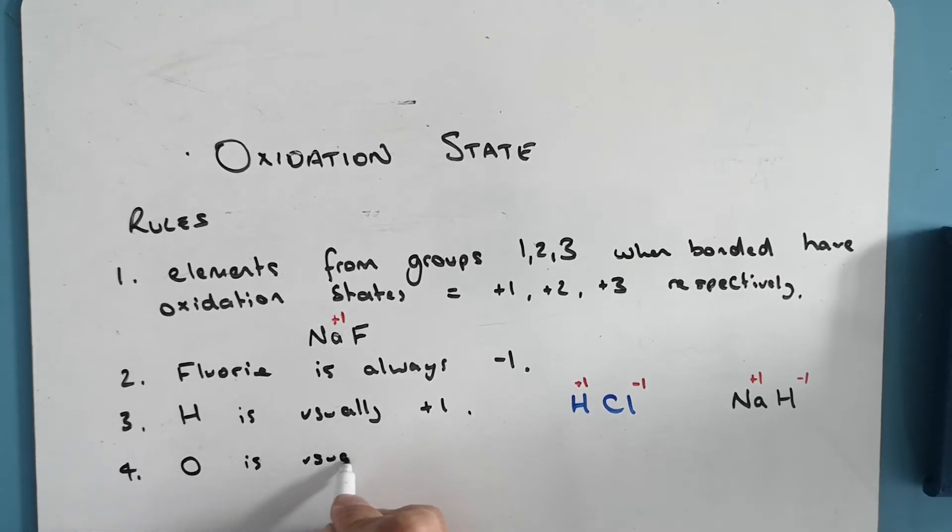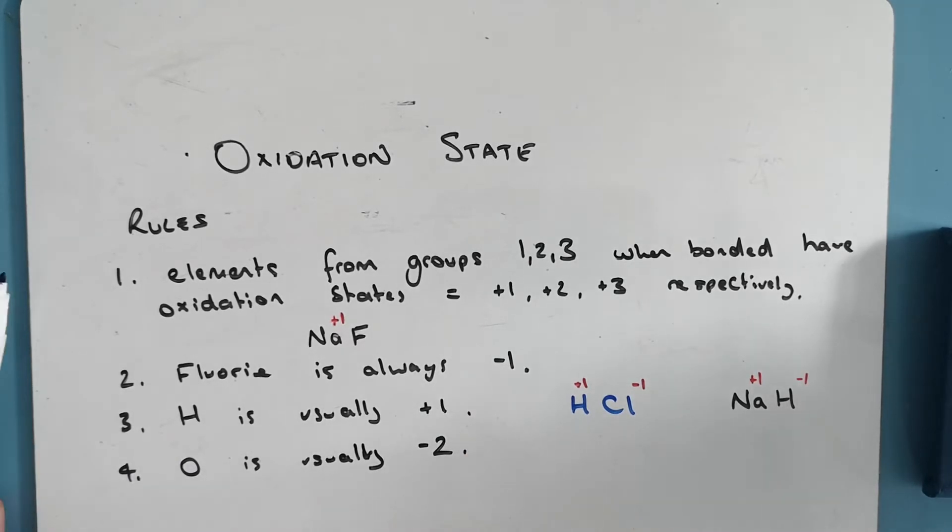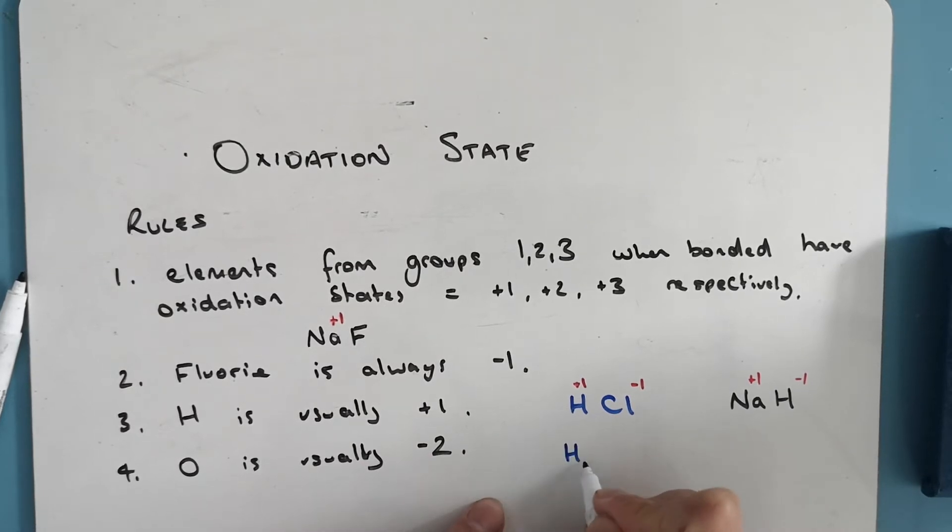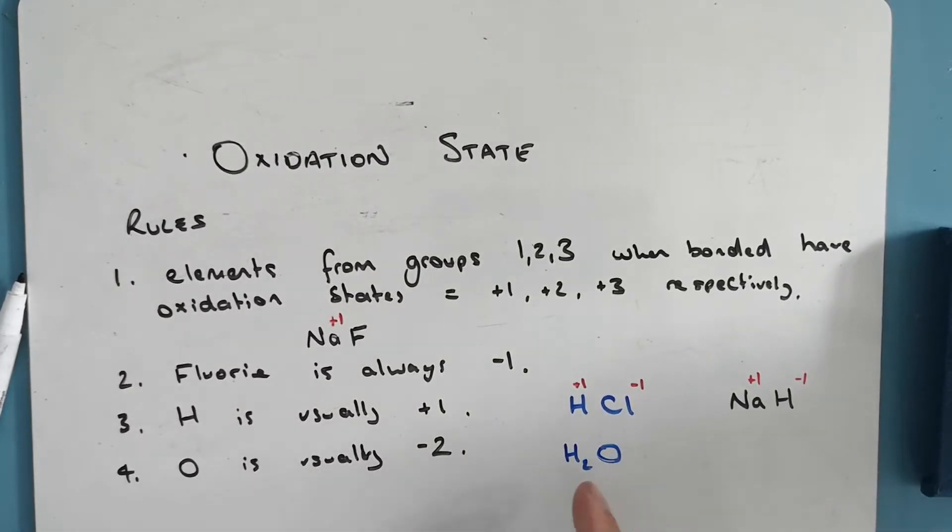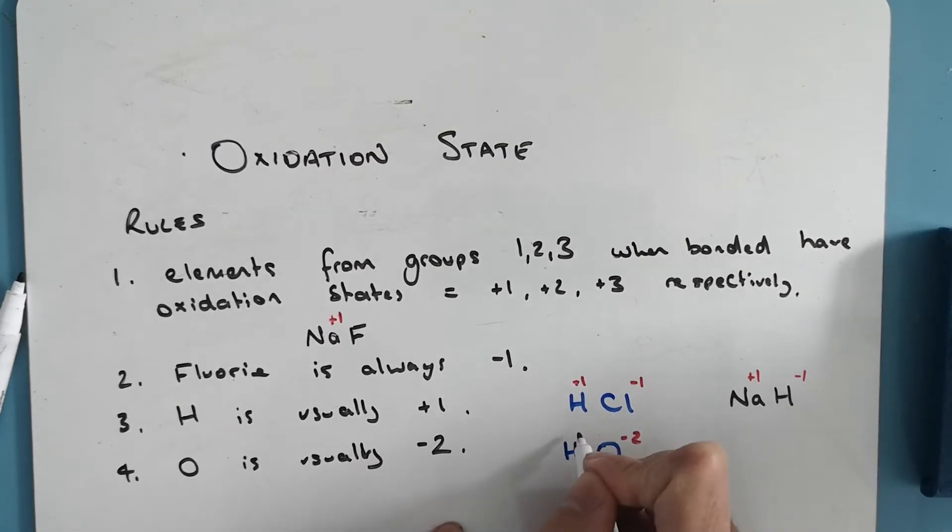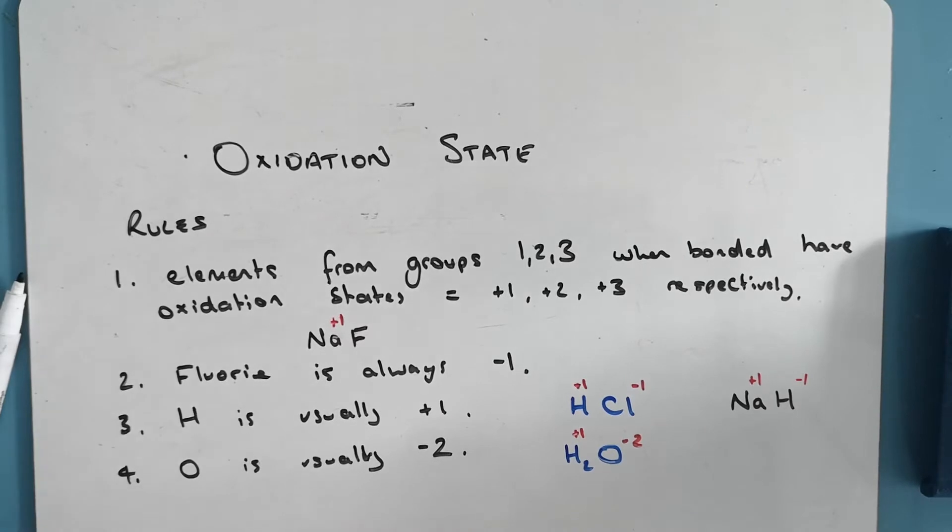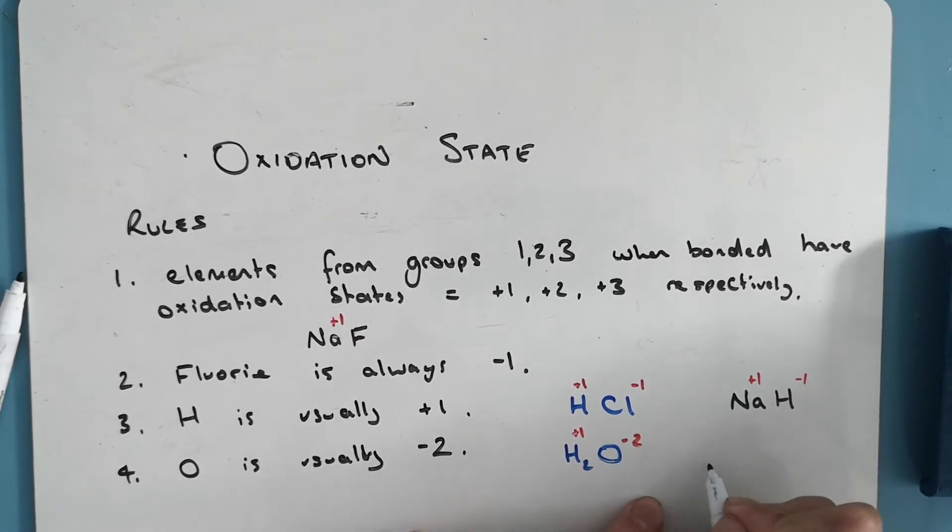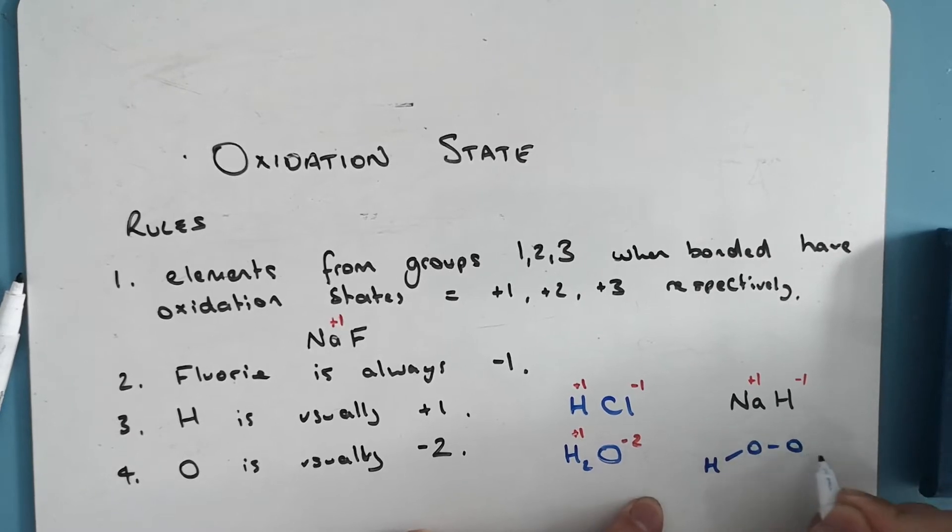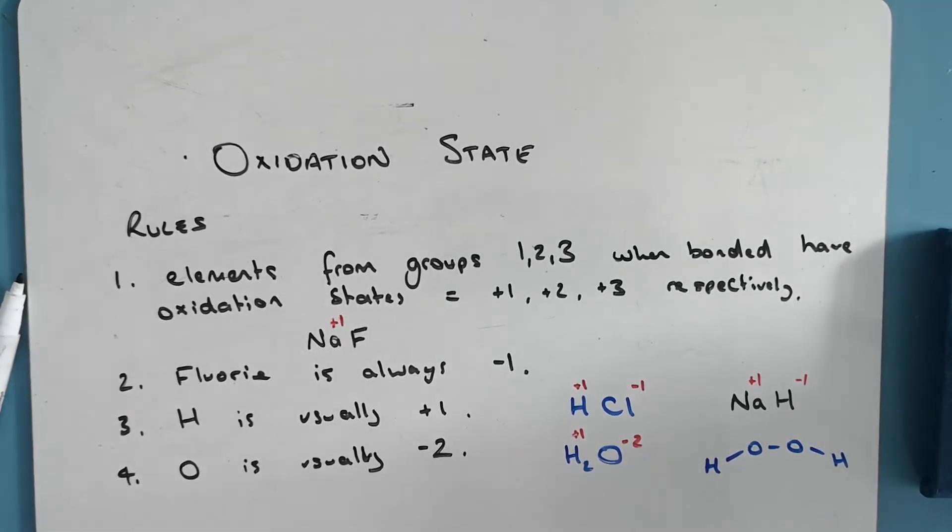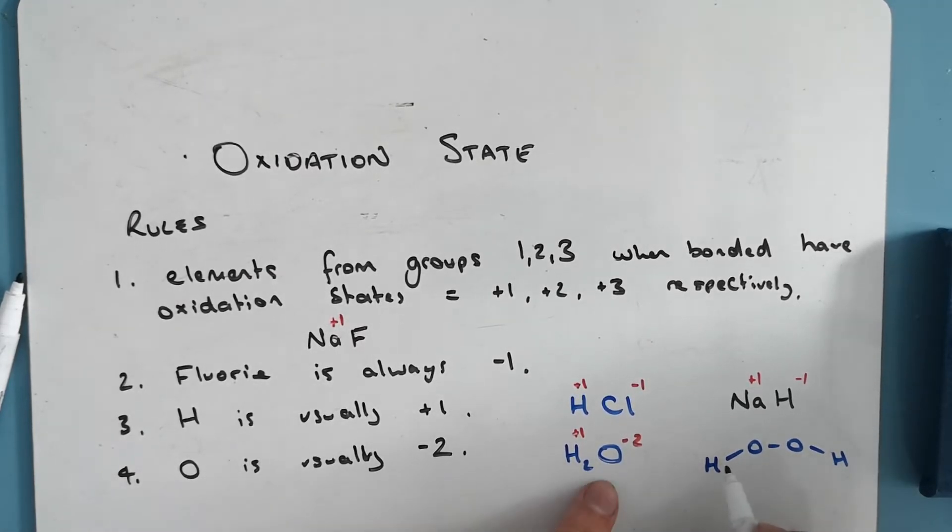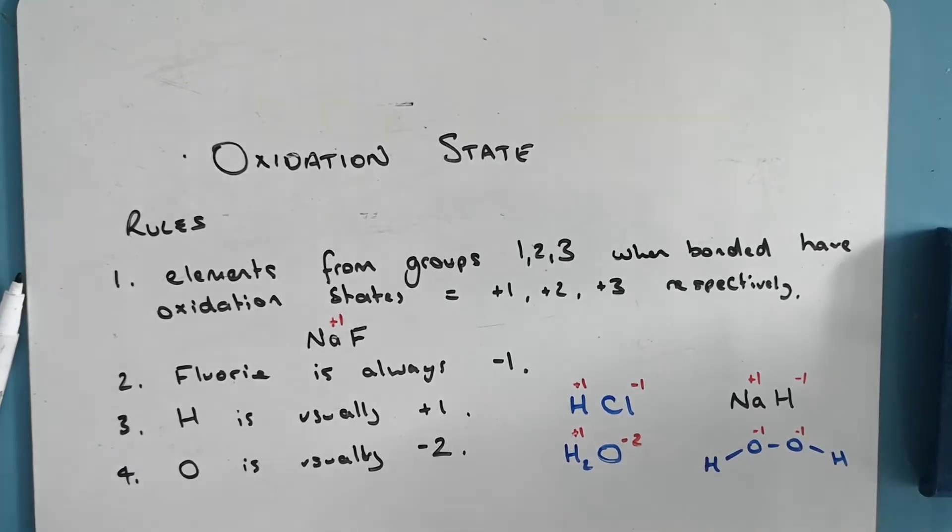Oxygen is usually minus two. Very electronegative, draws electrons towards it. So in H2O, it'll draw electrons from either hydrogen to become minus two. Each hydrogen is plus one. The exception to this rule is when it's hydrogen peroxide, H2O2. That's because there's only two hydrogens for the two oxygens, so they can only draw one electron towards it. So in hydrogen peroxide, they're each minus one. Each hydrogen is plus one.